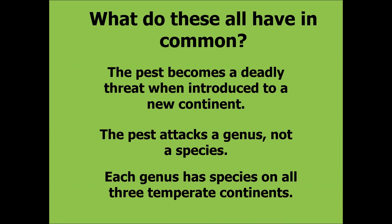The other key factor: each genus has species on all three temperate continents. That should be a pause for concern — not only when looking at what trees to plant, but also: is this genus found anywhere else? Is it found in Asia, for example? There may be a pest in Asia, not yet introduced here, that could show up and spend a decade or more hidden in the landscape, and then suddenly rear its ugly head and end up killing our North American trees.